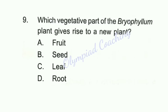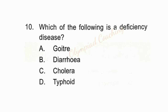Question number 9: Which vegetative part of the Bryophyllum plant gives rise to a new plant? Option C is correct — Leaf. Question number 10: Which of the following is a deficiency disease? Option A is correct — Goiter. Goiter is caused by deficiency of iodine.